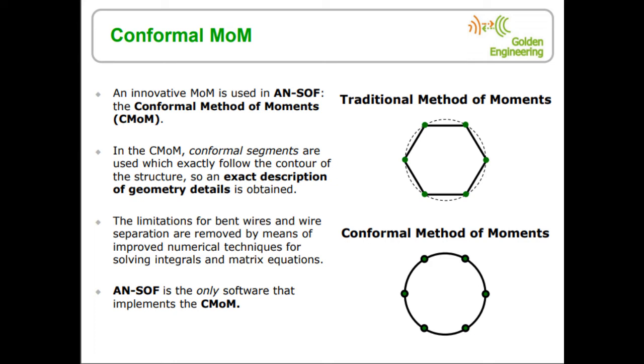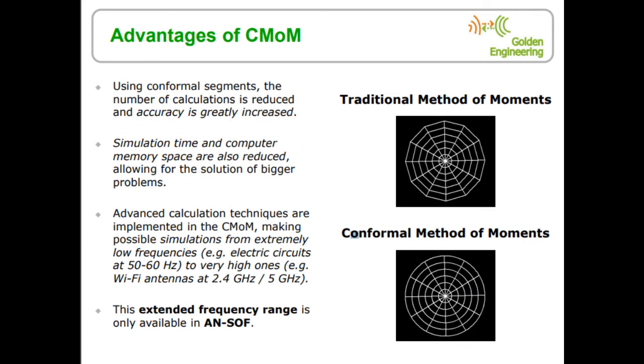In summary, we have the following advantages of using the CMoM: a reduction in the number of calculations since we need fewer segments to approach geometry compared to the traditional Method of Moments. Fewer segments means a smaller Z-matrix, fewer computer memory, and faster calculations.